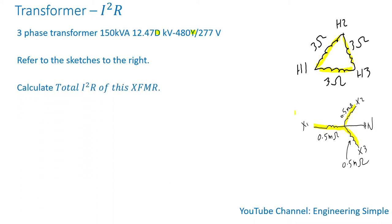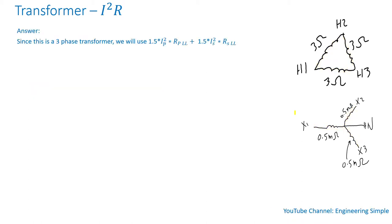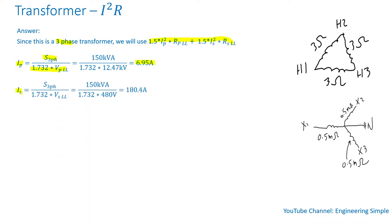Let's calculate the total I squared R of this transformer using the three-phase formula. First, the line current of the primary is the three-phase apparent power divided by the square root of 3 times the line-to-line voltage of the primary, giving 6.95 amps. For the secondary, the same formula gives 180.4 amps.